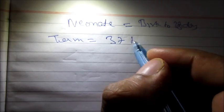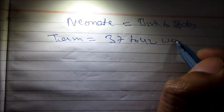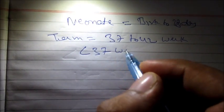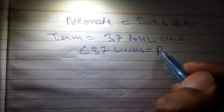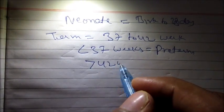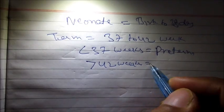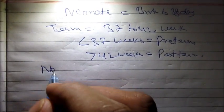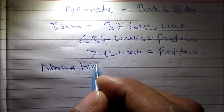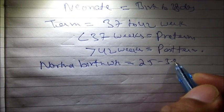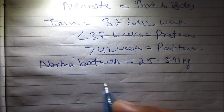The child is said to be term if the baby is born from 37 to 42 weeks. If the child has taken birth before 37 weeks, the child is said to be a preterm baby, and if it is greater than 42 weeks, the child is said to be a post-term baby.